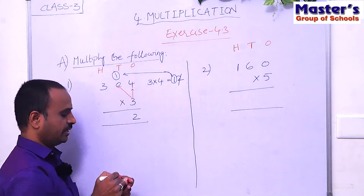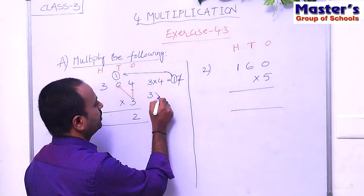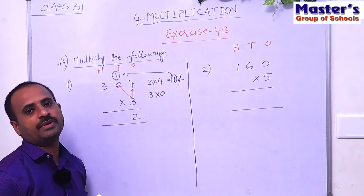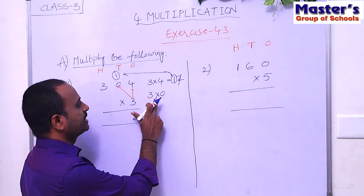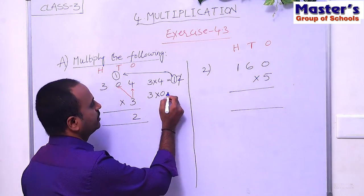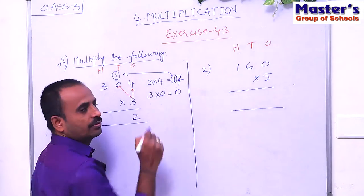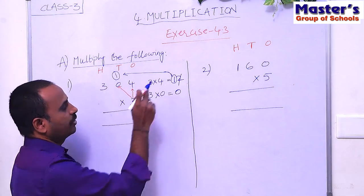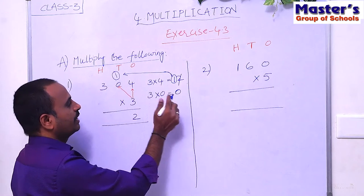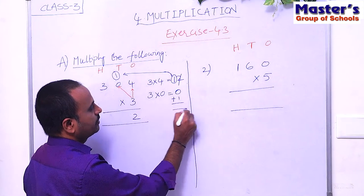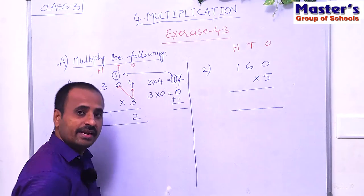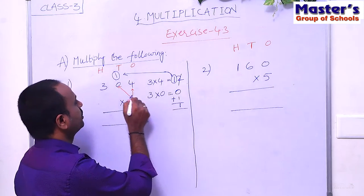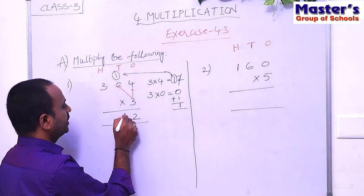Multiply 0 with 3 — that is 3 × 0. According to the properties of multiplication, if any number is multiplied with 0, we get 0. So 3 × 0 = 0. And if there is a carried number, we add it to the product. The carried number is 1, so 0 + 1 = 1. If any number is added to 0, we get the same number. So write 1 under the tens place.